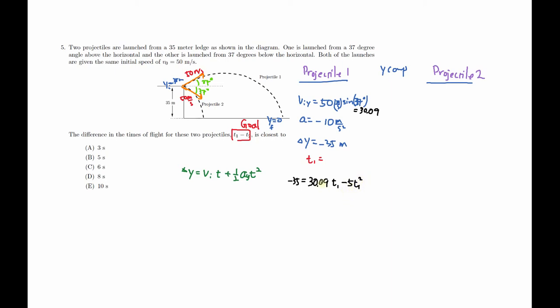I'm going to put both of the right side terms to the left side. Then you do notice that the sign changes. So 5T squared minus 30.09 T1 minus 35 equals zero.